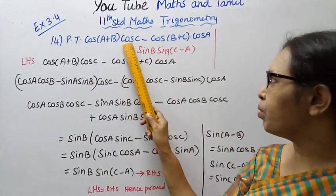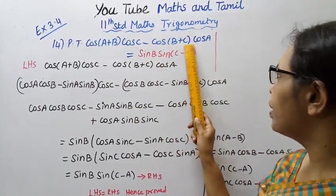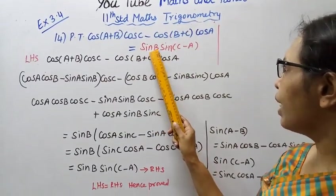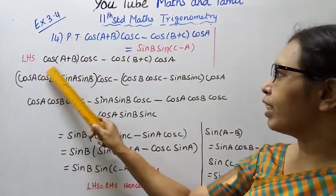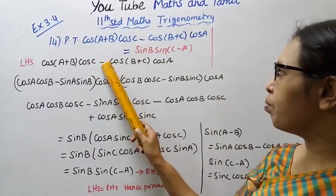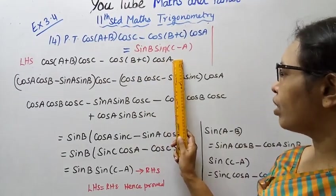Prove that cos(A+B)cos C minus cos(B+C)cos A equal to sin B sin(C-A). Now left-hand side, cos(A+B)cos C minus cos(B+C)cos A.